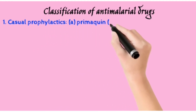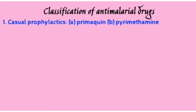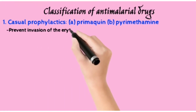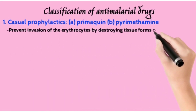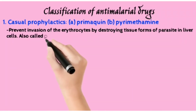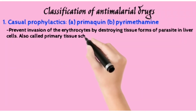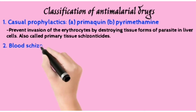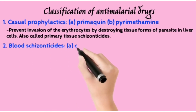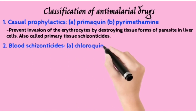The first classification is Causal Prophylactics — Primaquine and Pyrimethamine. These are going to destroy the tissue forms of the parasite in liver cells and prevent invasion of erythrocytes. They are also known as tissue schizonticides. Then come blood schizonticides.